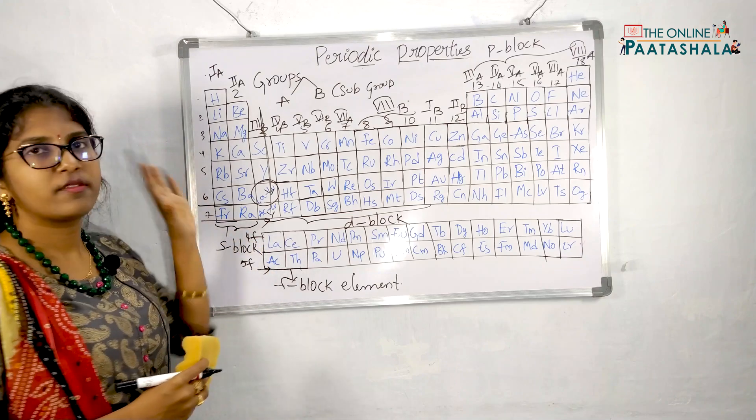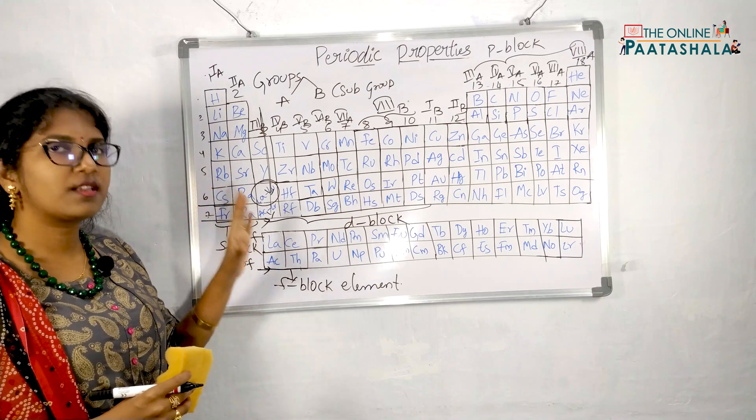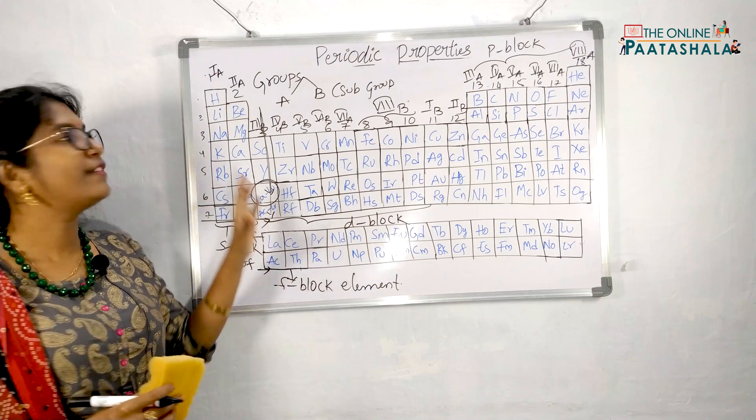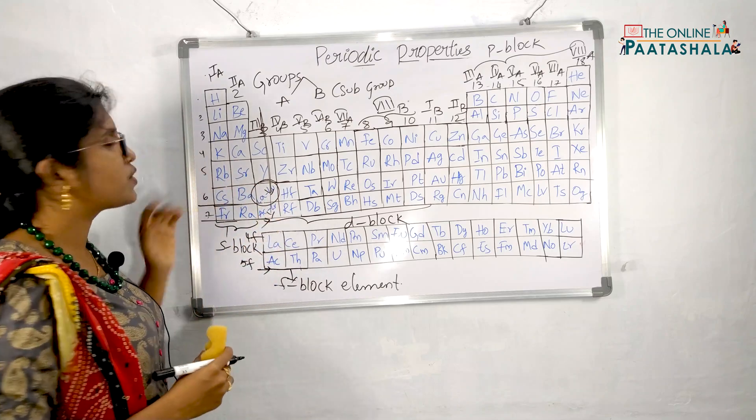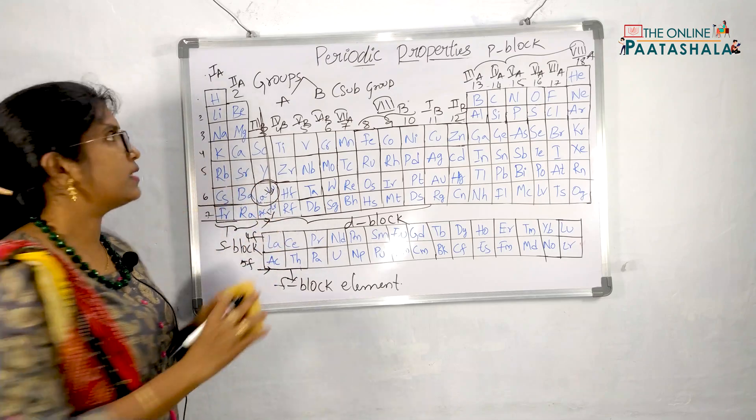From where do we get the f block elements? From the d block elements: the 6th period and 3rd B group gives one series, and the 7th period and 3rd B group gives another series. These are called the 4f series and 5f series. This is the general basics of groups.